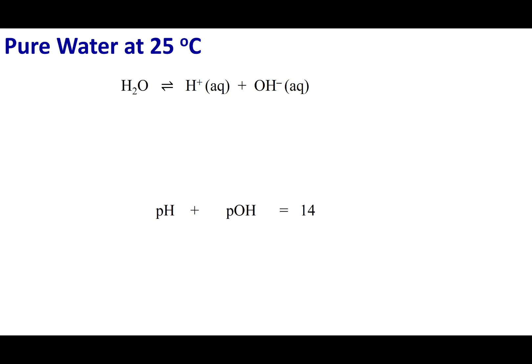Here's the autoionization of water. It's an equilibrium. We know the equilibrium constant for this equation is 1 times 10 to the negative 14th at 25 degrees. That comes from taking the concentration of H plus times the concentration of OH minus.